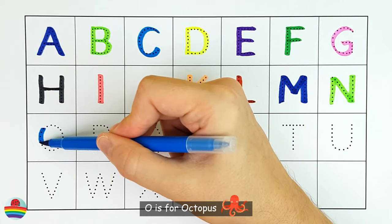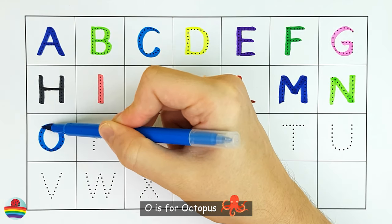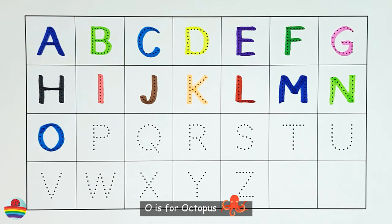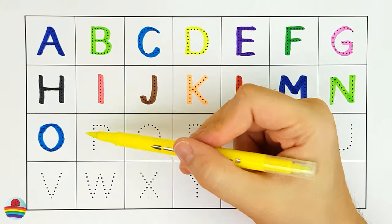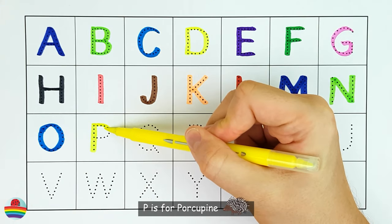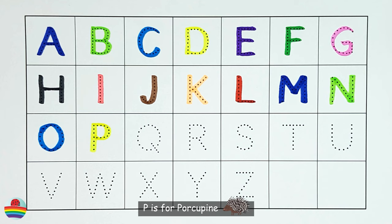O. O is for octopus. O. P. P is for porcupine. P.